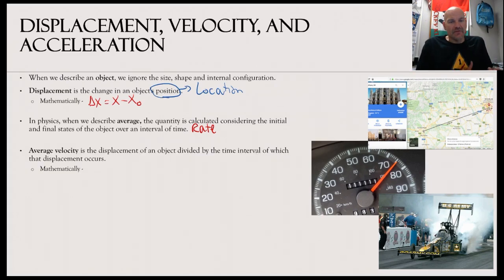The first thing is average velocity. Average velocity is the displacement of an object divided by the time interval over which that displacement occurs. So velocity, it is a vector quantity, much like displacement is. I should put my little arrows. So velocity is displacement over time.